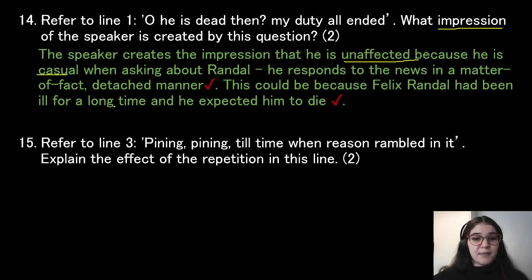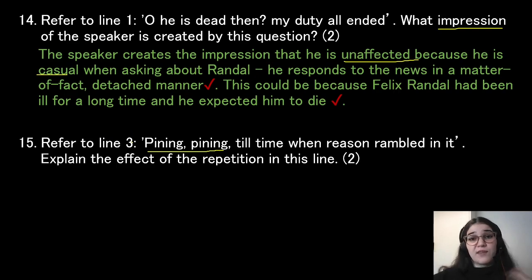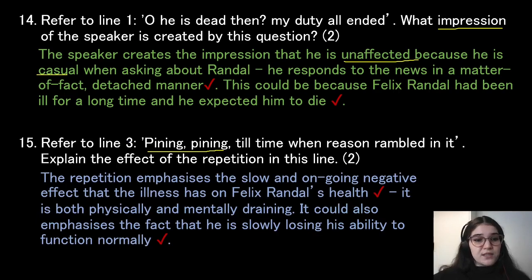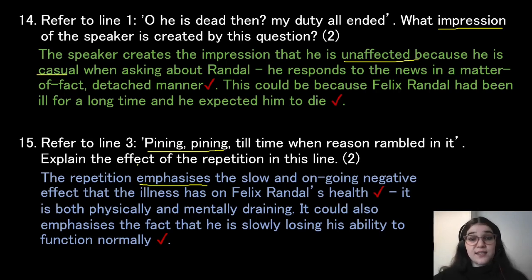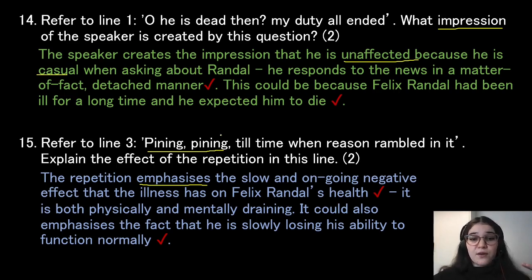Refer to line three: 'Pining, pining, till time when reason rambled in it.' Explain the effect of the repetition in this line. The repetition of 'pining' emphasizes the slow and ongoing negative effect that the illness has on Randall's health. Pining means to decline in health physically and mentally. We know Felix died months later, so it was a slow process and the repetition emphasizes that. It also emphasizes how he is slowly losing his ability to function normally, as evidenced by 'reason rambled in it.'